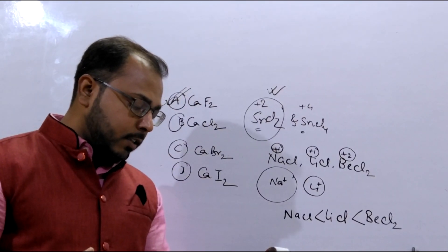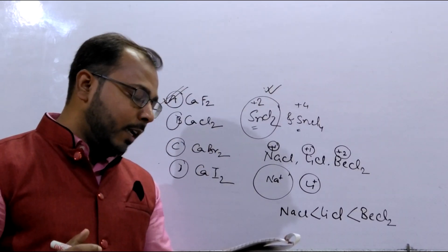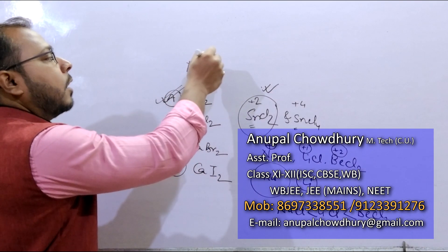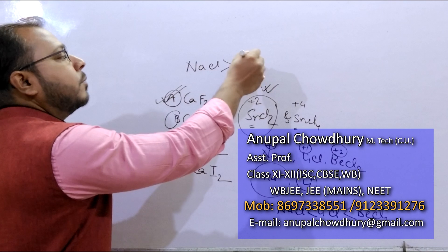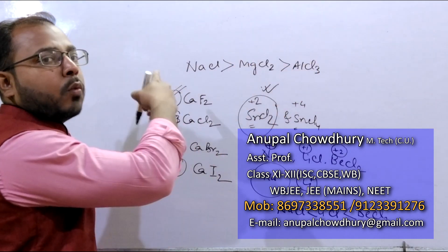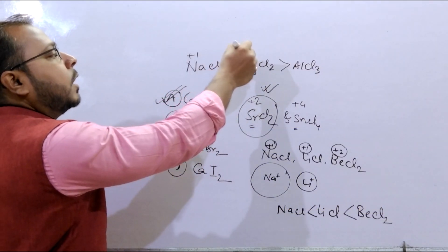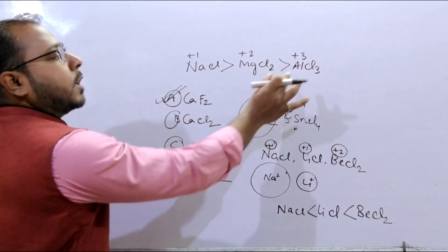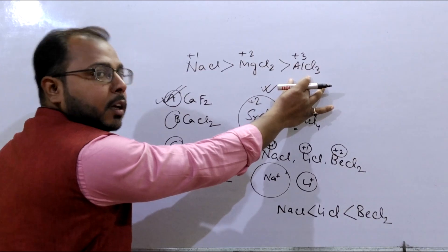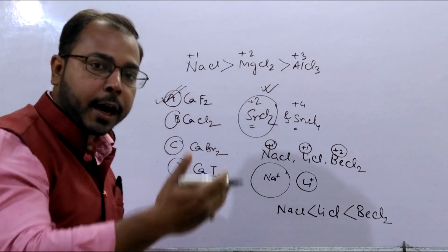The next question, which I have already discussed in my Fajan's rule video: arrange them according to melting point order. The order is NaCl > MgCl2 > AlCl3, and this is also the water solubility order. Because NaCl has a +1 charge, MgCl2 has +2, and AlCl3 has +3 — so AlCl3 has the most covalent nature and least ionic character, giving it the lowest melting point.